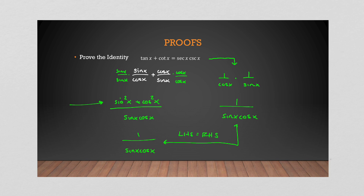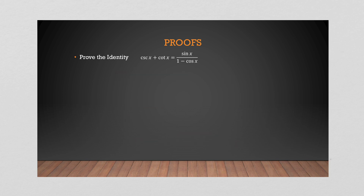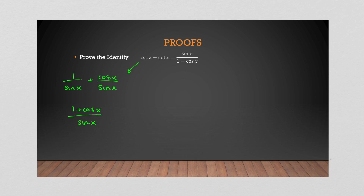This really is a puzzle — there are multiple ways to approach these things. Let's look at another: csc x + cot x = sin x / (1 - cos x). I'll work with the left-hand side first. csc x is 1/sin x and cot x is cos x / sin x. I already have a common denominator, so I get (1 + cos x) / sin x.